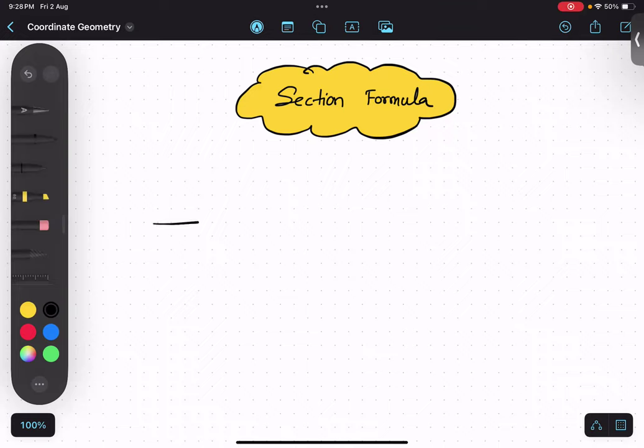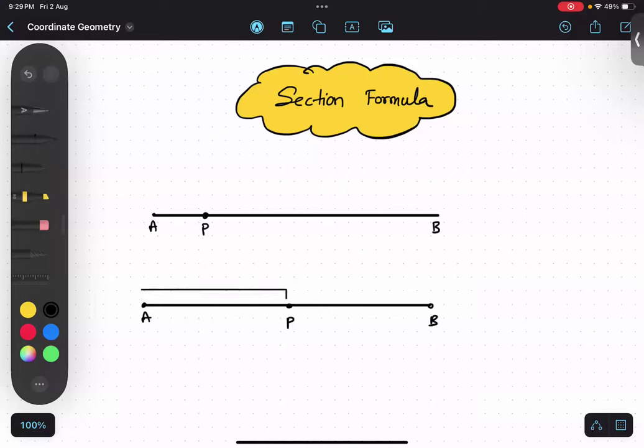Section formula talks about two points, point A and B, with another point in between A and B. It can be anywhere. Let's say it was in the middle. So I can say that this portion equals this portion. In terms of ratio, I can say that AP ratio PB is 1:1. Basically they are equal because point P is the midpoint.